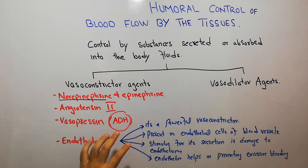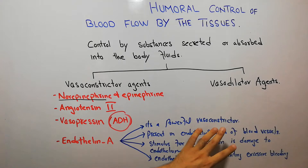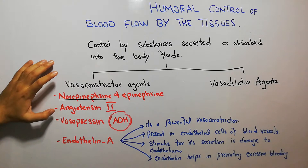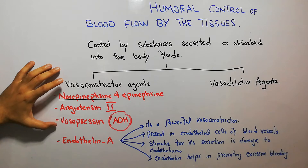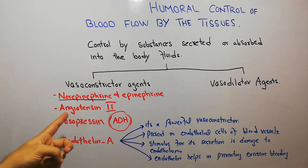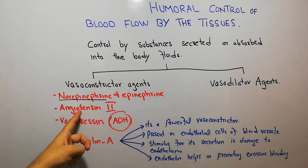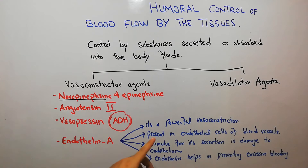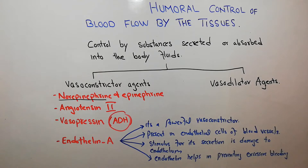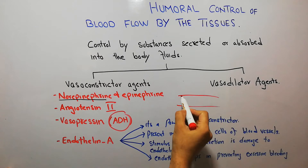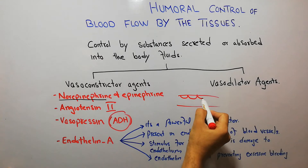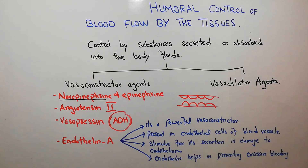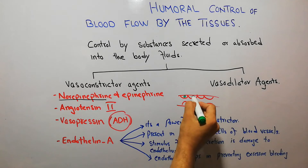Endothelin A is a powerful vasoconstrictor. Its vasoconstriction power matches that of vasopressin and angiotensin 2 — it is as powerful as either of those agents. It is basically present in the endothelial cells of blood vessels. For example, in a blood vessel, endothelin is present in these endothelial cells lining the vessel wall.